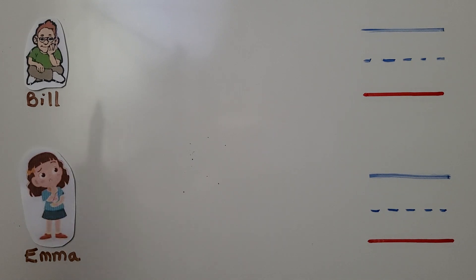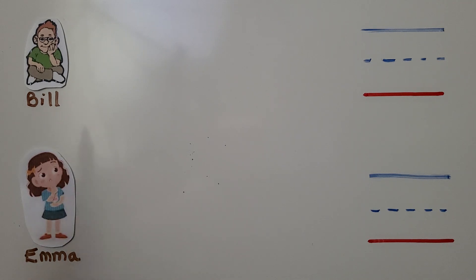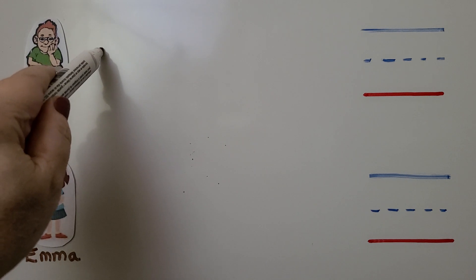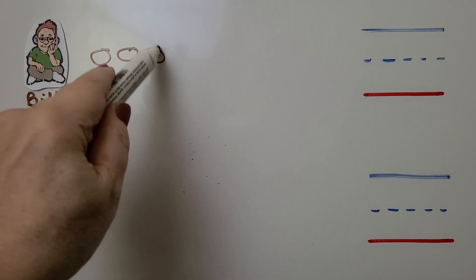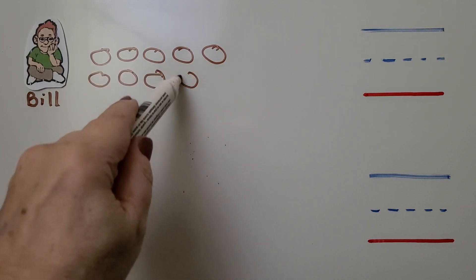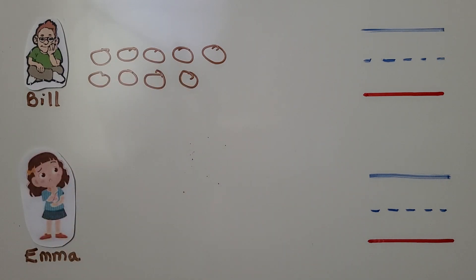Here we have Bill and here we have Emma. Bill ate nine cookies. Emma ate a number of cookies three less than nine. So how many cookies did Emma eat? We can make circles for cookies — Bill ate nine: one, two, three, four, five, six, seven, eight, nine. That's nine cookies. We can write the number nine.